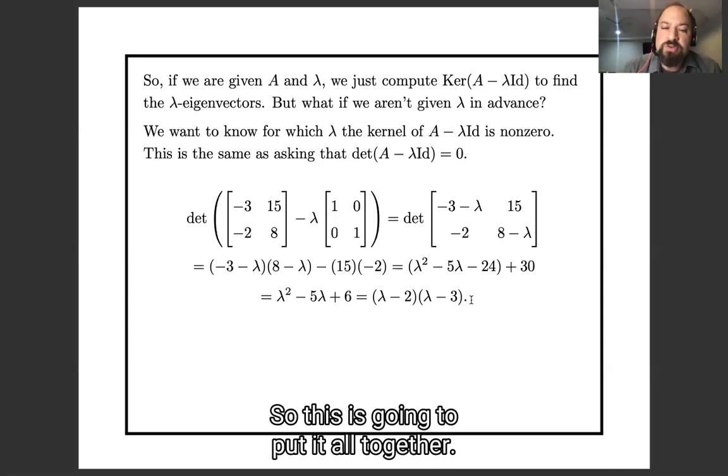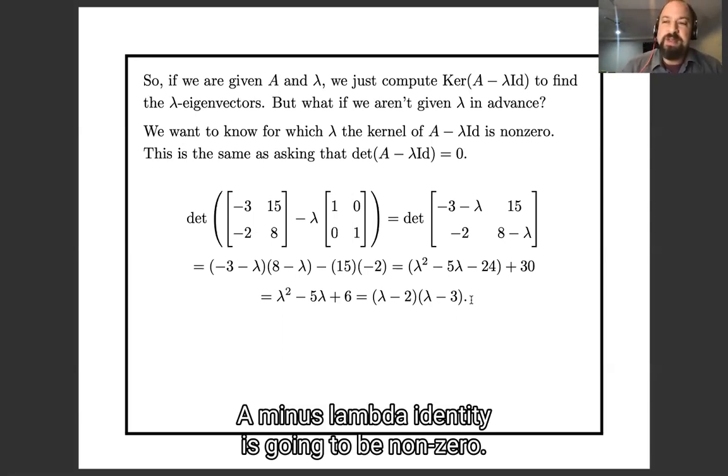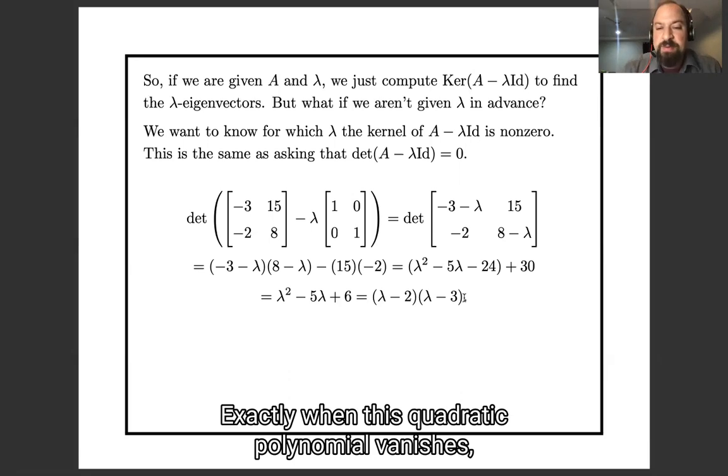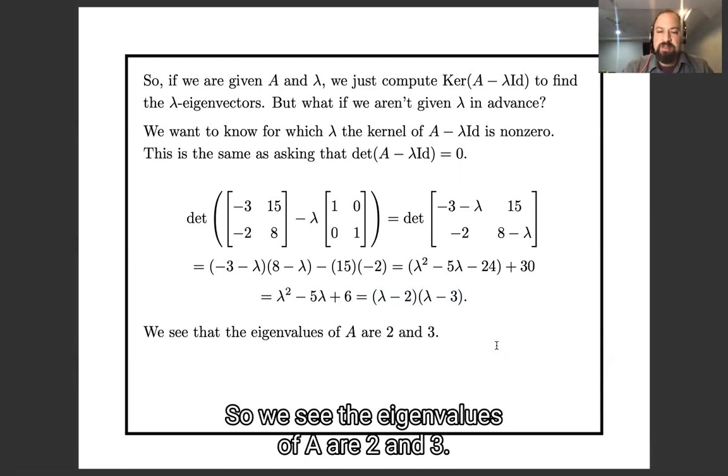So this is going to, so putting it all together, the kernel is going to be not of A minus lambda identity is going to be non-zero exactly when this quadratic polynomial vanishes, which is that lambda equals two or lambda equals three. So we see that the eigenvalues of A are two and three.